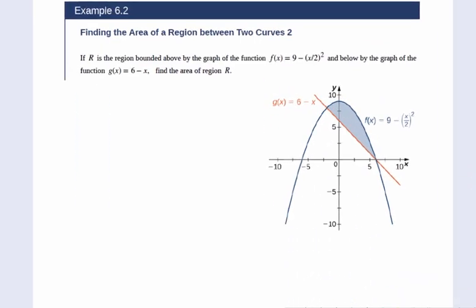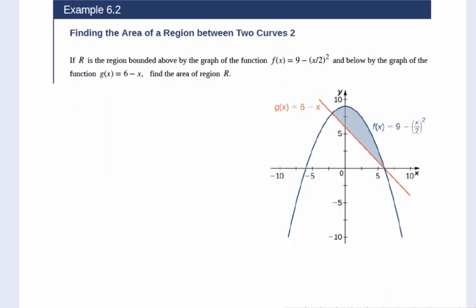Let's look at example 6.2. It says find the area of the region between two curves. We have f(x), which is the quadratic 9 minus x squared over 2, and we have the function g(x), which is 6 minus x.